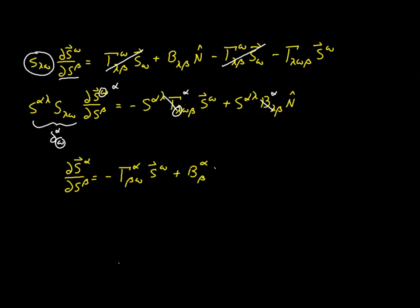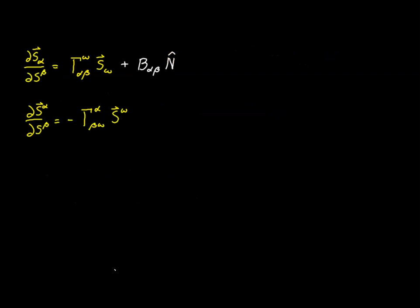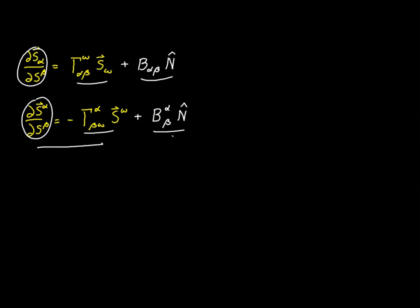So we started with the expression for the partial derivative of the contravariant basis vector and said we needed an extra term to accommodate the fact that this vector may lie in any direction. That extra term is now identified. Just as in the covariant case, this vector may point in any direction, so we need both a surface projection and a normal projection.